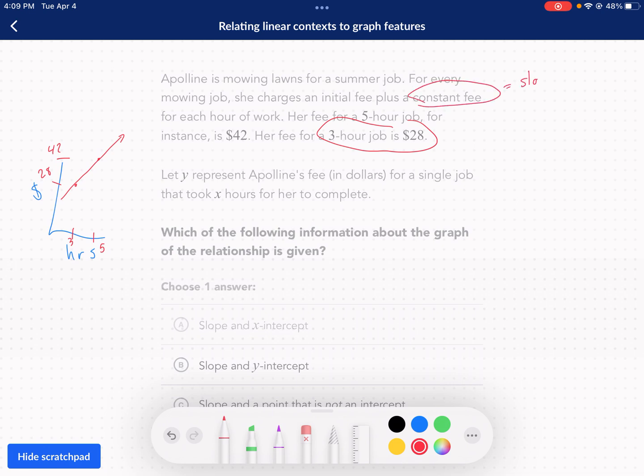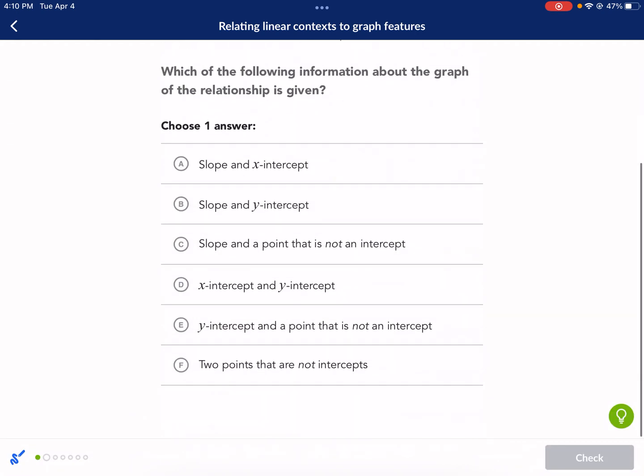It doesn't tell you what her constant fee is. That would be the slope. So it doesn't tell you what the initial fee is, because that would be your y-intercept. And it doesn't tell you where she has zero hours of work. That would be the x-intercept. So we don't know any of the intercepts, and we don't know the slope.